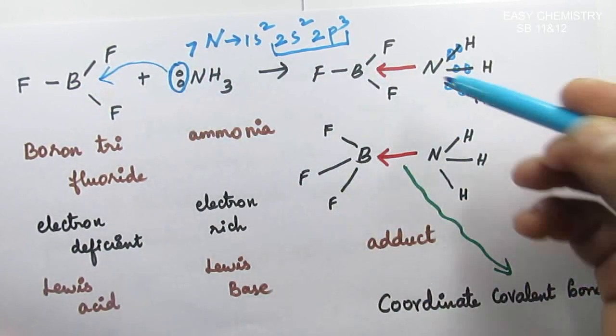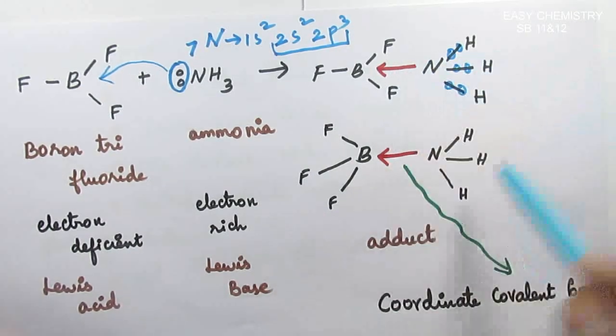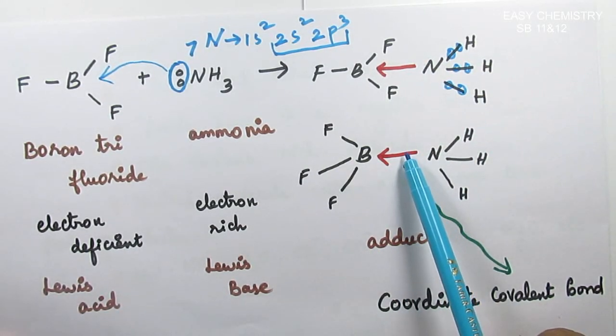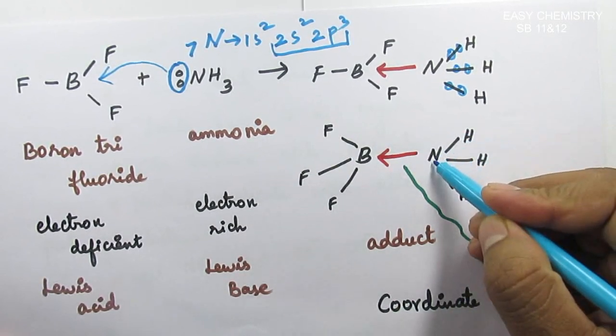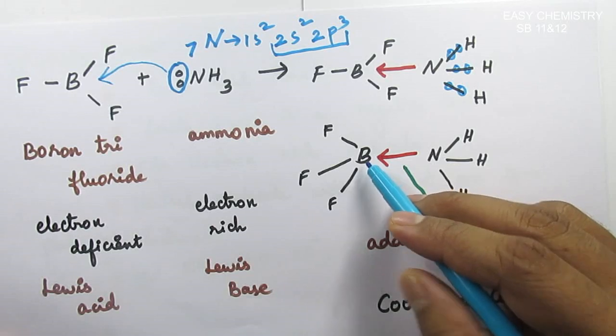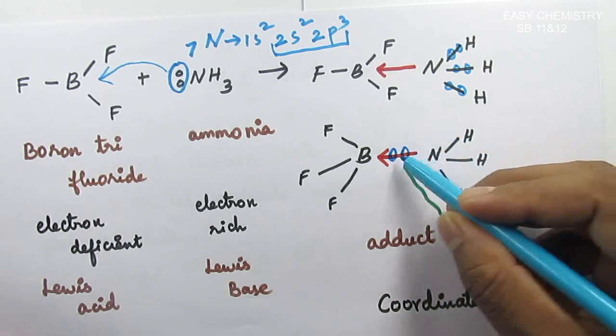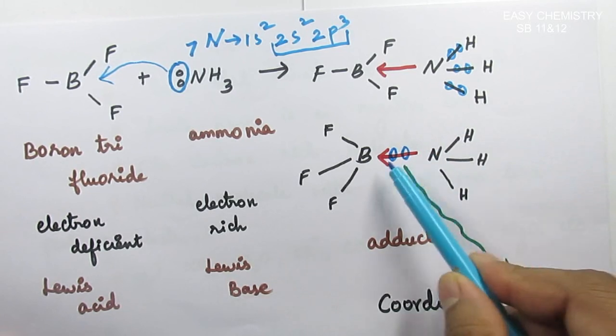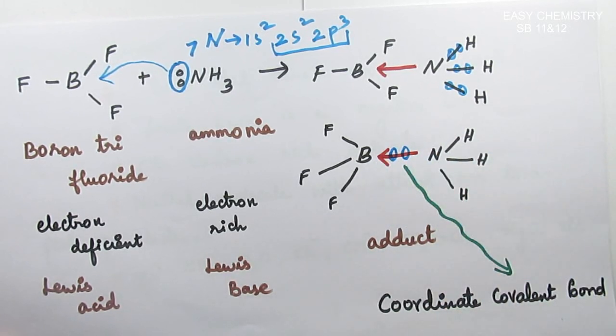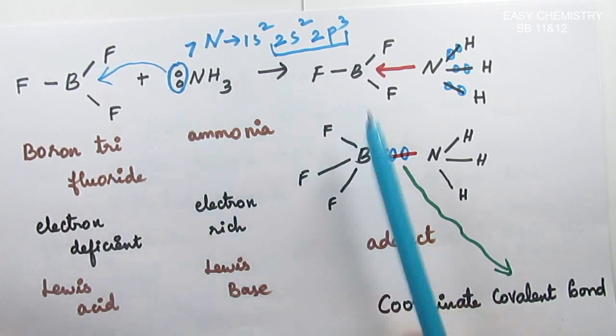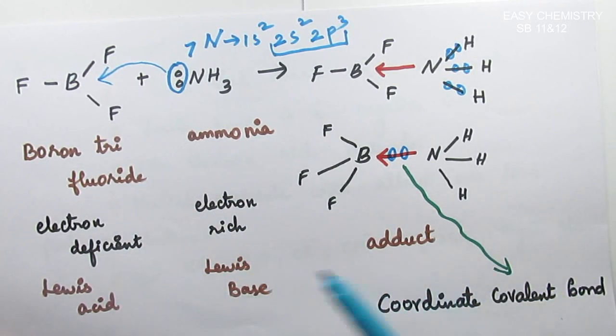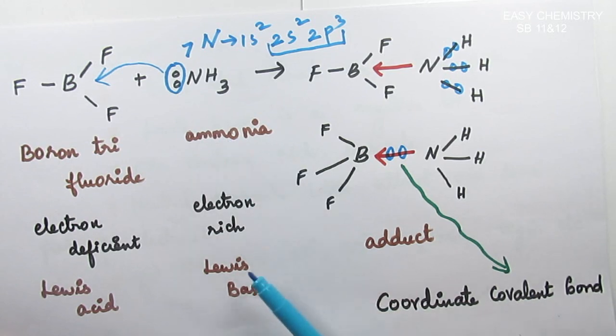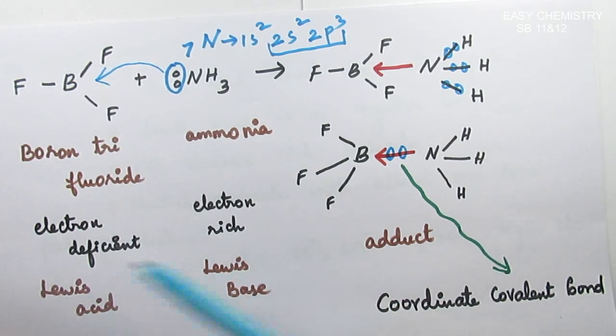So that's the coordinate covalent bond. This is what we are forming. If you look at the symbol, you can use arrow to indicate. This is the chemical bond. This is nitrogen forming the bond. This is the coordinate covalent bond. Now we have to understand Lewis acid and base.